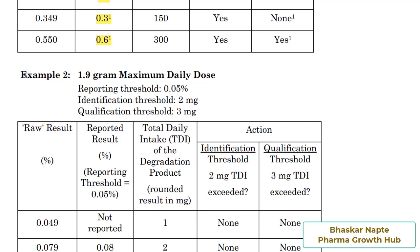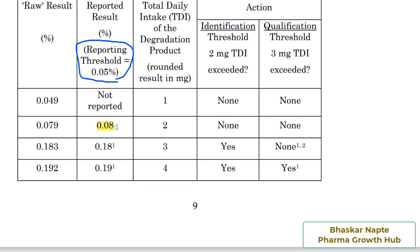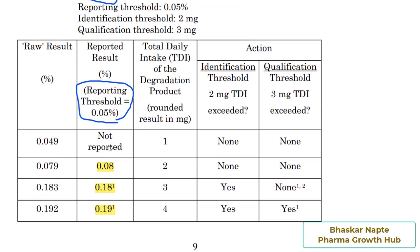Now let's examine example number two, where the maximum daily dose is 1.9 grams — greater than one gram. So the reporting threshold is 0.05%, meaning impurities must be reported to two digits after the decimal. You can see: 0.08%, 0.18%, and 0.19% — all with two digits after the decimal. This is the very important difference when reporting impurities for new drug substances or new drug products. Thank you.